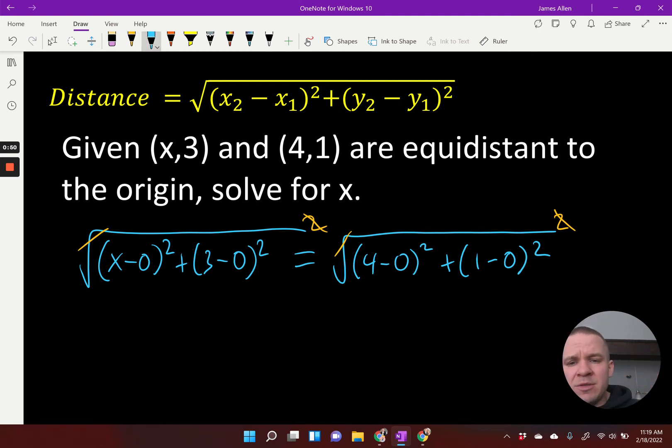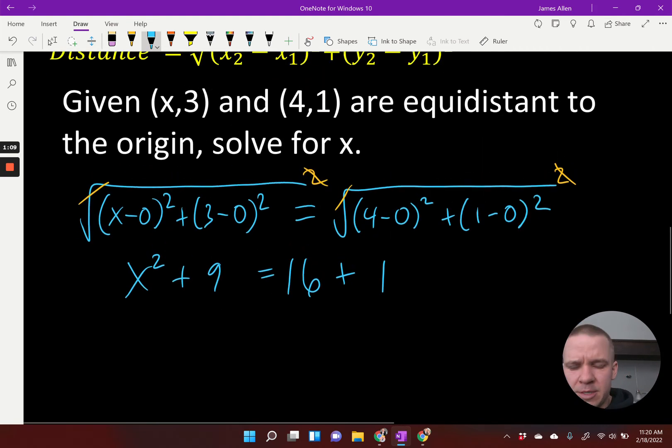Now, let's do some simplifications. I have x minus 0 squared, so that's just x squared. I have 3 minus 0 squared, so 3 squared is 9. On the other side, I have 4 minus 0 squared, so that's 4 squared is 16. And then 1 minus 0 squared, that's just 1. So things cleaned up pretty quickly here, it looks like.